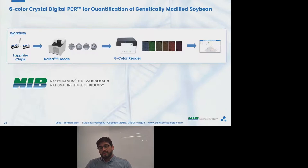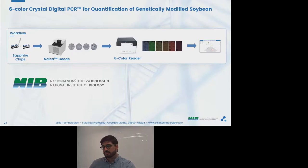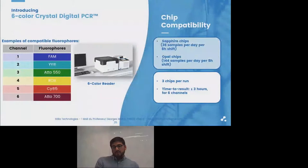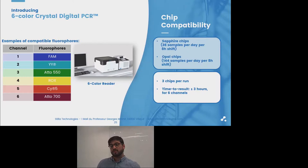With the six-color reader, the setup is identical to the three-color workflow: one pipetting step to load the Sapphire chips, then the Naica geode to perform the partitioning and thermal cycling. The difference is now in the number of colors the reader can detect, doubled from three to six. We still have our fully integrated software to analyze results in an easy and intuitive manner. The six-color Crystal Digital PCR can use a wide range of fluorophores as in qPCR multiplexing — the listed fluorophores are examples of compatible options, though this is not an exhaustive list. The six-color reader is compatible with our Sapphire chips and our soon-to-come Opal chips, allowing you to run up to 36 or 144 samples per day respectively with one geode.